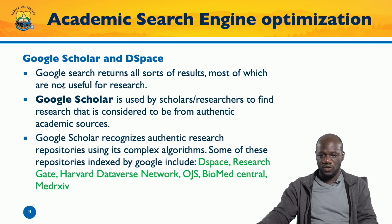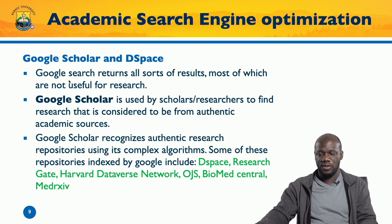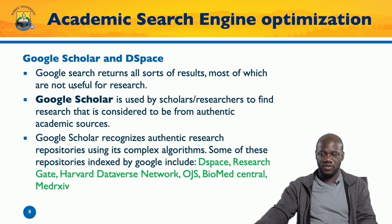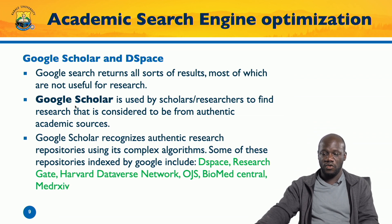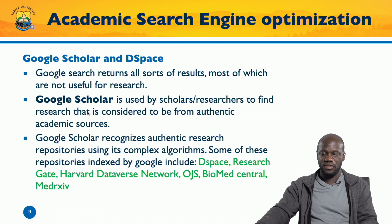When somebody goes to Google and searches for something, they get all sorts of results — most of the time not useful for academic research. Google has another branch called Google Scholar, used by scholars and researchers to find research from authentic academic sources. Google recognizes authentic research repositories using its complex algorithm, and DSpace is among those naturally indexed.